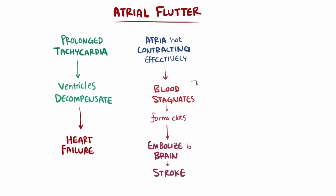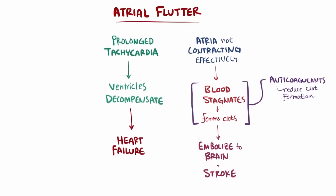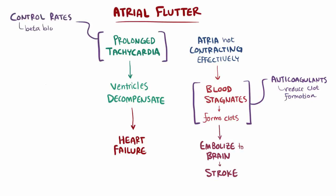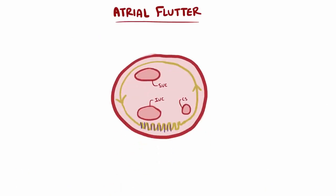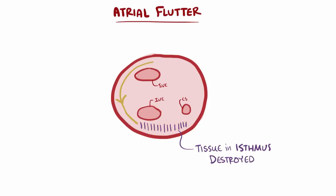Usually because of the potential for embolism, people with atrial flutter are given anticoagulants, or blood thinners, to reduce the chance of clot formation. They might also be given medications to control rates in the ventricles, like beta blockers or calcium channel blockers. Alternatively, an electrical cardioversion can be performed to stop the episode of flutter — these essentially depolarize all the atrial tissue at once and let the sinus node take control again. Finally, depending on the type of flutter, patients might be good candidates for a radiofrequency catheter ablation, where the cavo-tricuspid isthmus is destroyed such that no signals can propagate through it, and therefore no circuit can develop around the tricuspid valve.